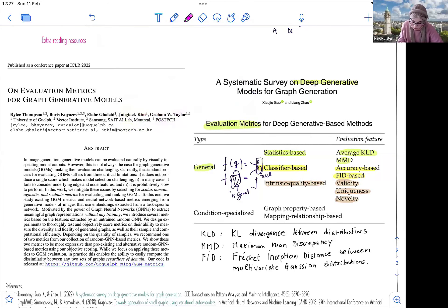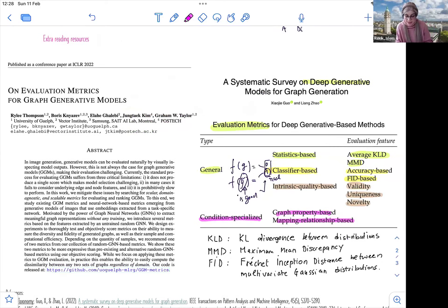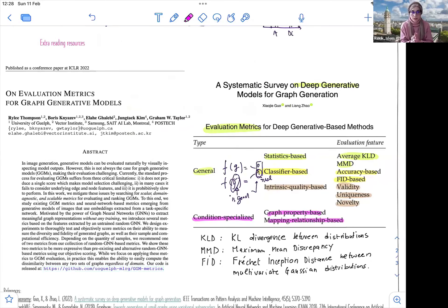And now for the condition specialized, these are they look at graph properties and more advanced things. So if you guys are interested, you can check these in detail in the paper. So they are expanded on the paper. And you can also have extra reading resources.